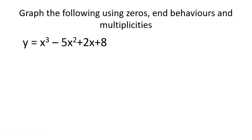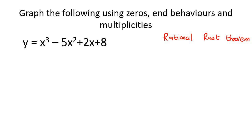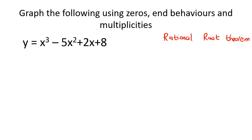Let's do another one. With this example, what makes it more interesting is that it doesn't have any brackets, so we can't find the zeros easily like in the previous one. We're actually going to have to turn this into brackets, and we're going to use the rational root theorem, which tells us that if this expression has any rational roots, we can find them by looking at the factors of the constant and the leading coefficient.